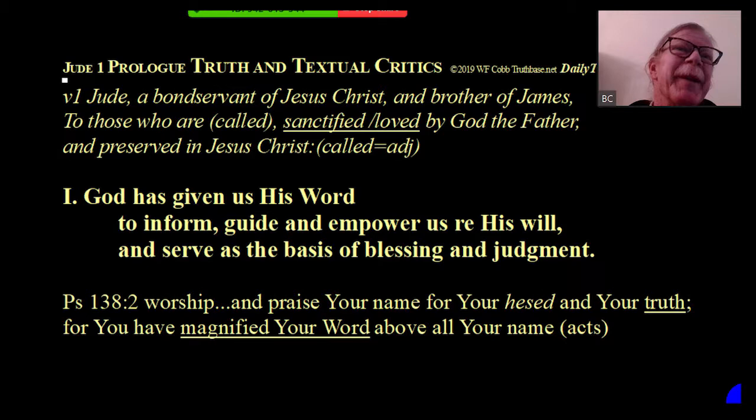I remember sitting with some doctoral students at Dallas, and they were saying how they had been reading a couple of dissertations that demonstrated what horrible scribes the Alexandrian scribes were. Because if they didn't like something, they just cut it out. They had an anti-supernatural bias, and their texts are a whole lot shorter. And people think, well, the stuff found in Alexandria looks better, it looks older, so it must be the right one.